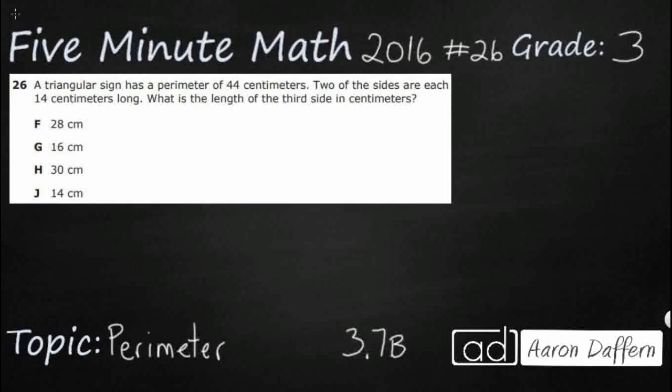So we have a triangular sign that has a perimeter. Let's define that first. Perimeter and area are two measurements that we use when we're looking at flat shapes. Perimeter is on the outside, area is on the inside.